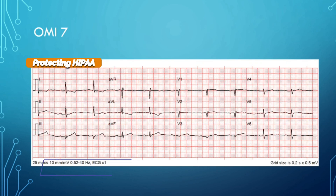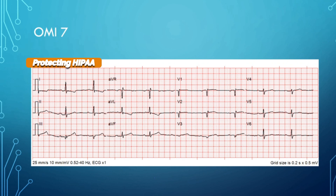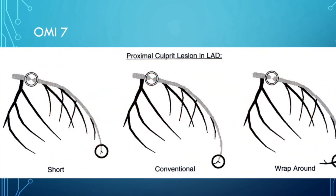This case is very similar — hyper-acute T waves in the inferior leads with well-formed Q waves in V1 and V2, and the precordial T waves look hyper-acute as well. This could be a type 3 wrap-around LAD occlusion. That pattern appears when you get ST elevation in the precordial leads combined with elevation in the inferior leads because the LAD wraps around the bottom of the heart.